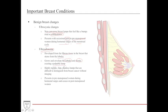Fibroadenomas are highly mobile, firm, and painless lumps that are difficult to distinguish from breast cancer without proper imaging. The big difference is that fibrocystic changes have some pain, while fibroadenomas are usually painless. Fibroadenomas present in premenopausal women but can also present in postmenopausal women.